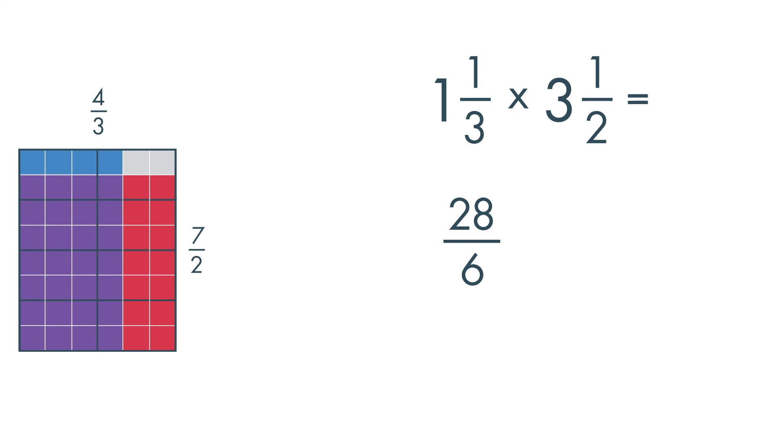Twenty-eight-sixths can be simplified by dividing by two. This is equal to fourteen-thirds. Fourteen can be divided by three four times, with two-thirds left over.